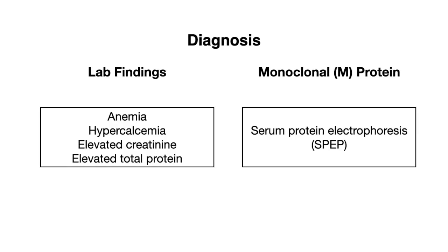So what does diagnosis look like? This typically involves ordering a few different tests, starting with blood work, because you're going to look for anemia, hypercalcemia, an elevated creatinine, or an elevated total protein. We also have diagnostic tests that will look for a monoclonal protein or M protein.